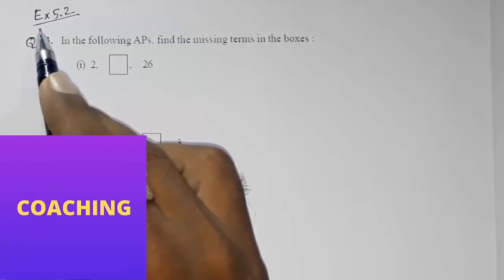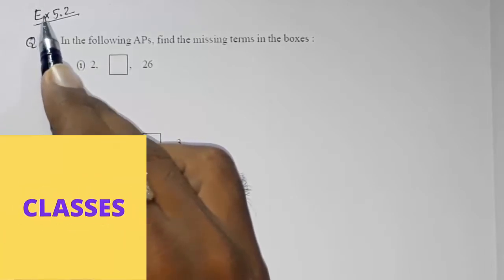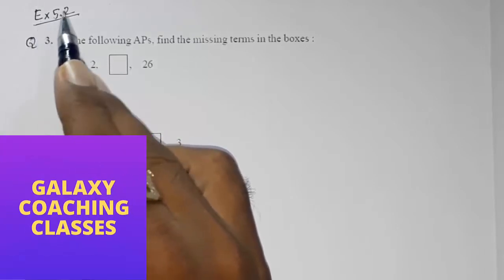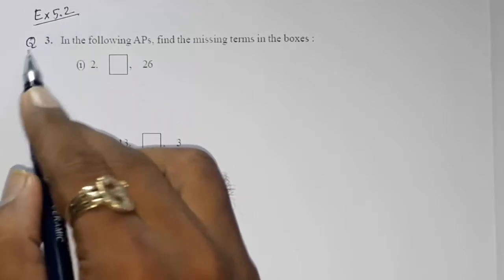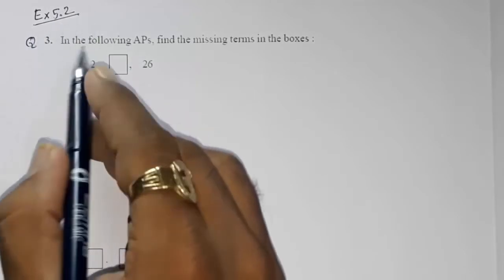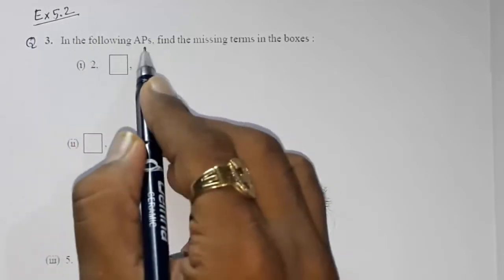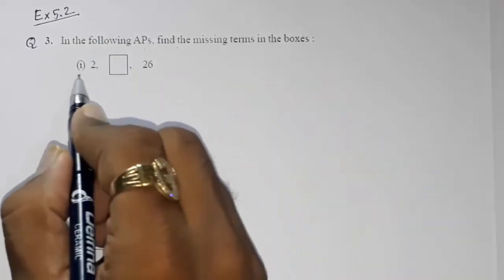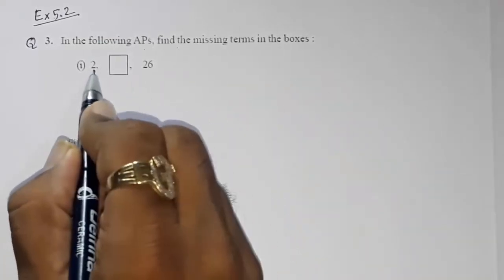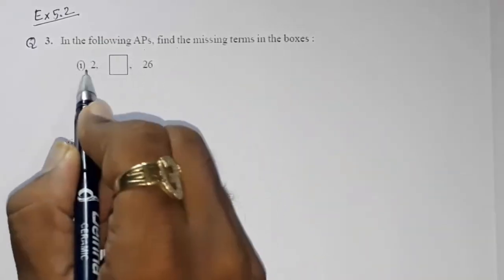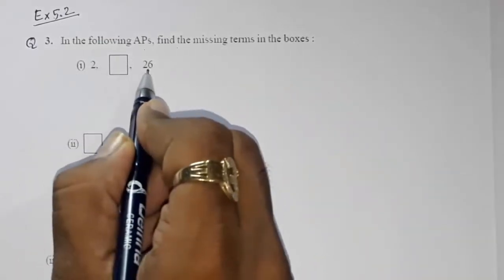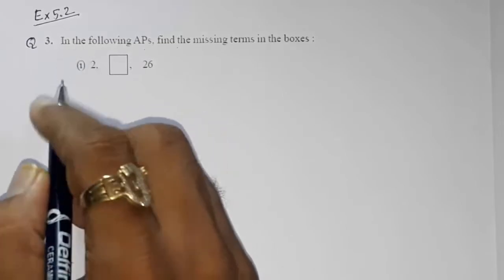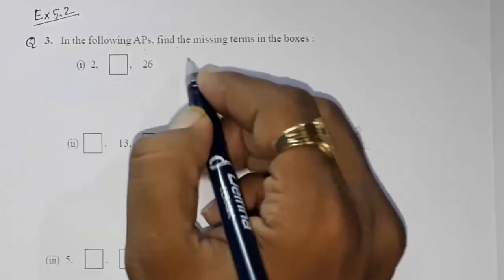Hello friends, today we are going to solve CBSE Class 10 Maths Exercise 5.2, Question Number 3. In the following APs, find the missing terms in the boxes. In the first part, they have given us the first term and the third term, and we have to find the second term.